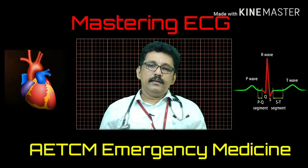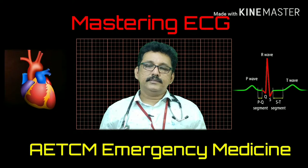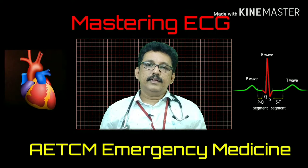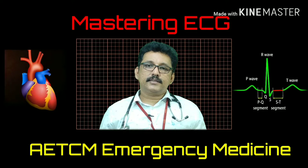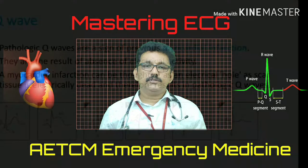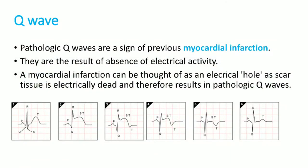Normally you don't see Q waves in most leads except lead III, where prominent Q waves can appear. If you see a very prominent Q wave in any other lead, you must suspect myocardial infarction. When there is complete destruction of myocardial tissue, there is a negative electrical window — no positive deflection is produced, and you get a negative Q wave.